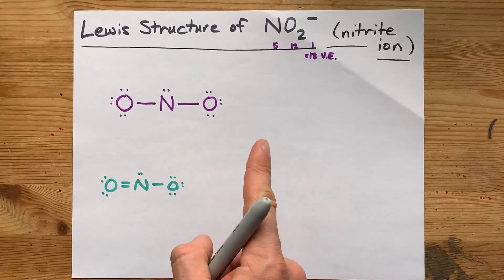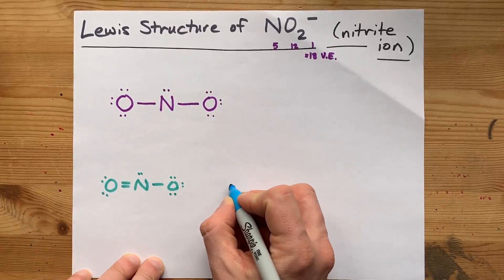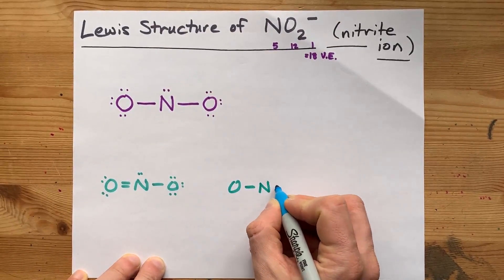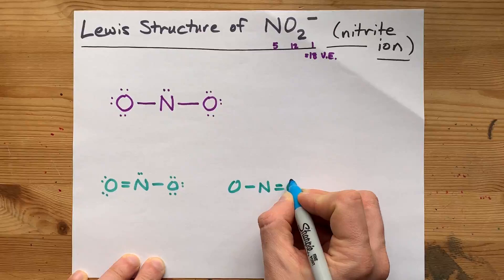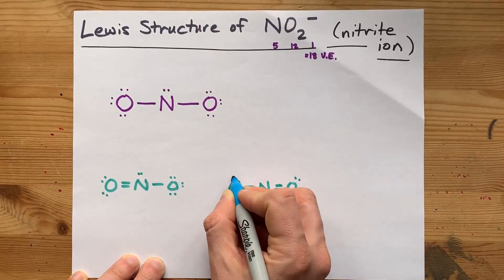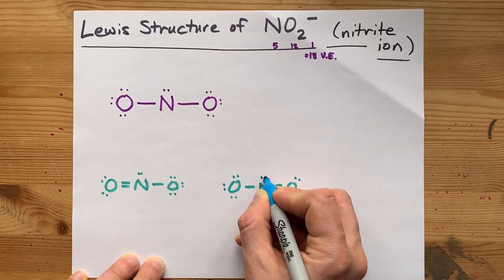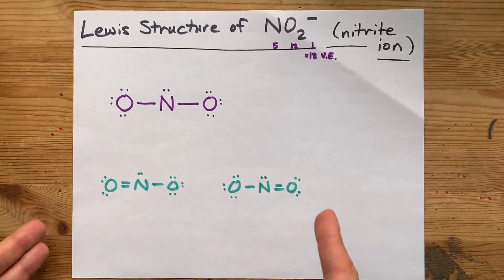But it's not the only valid Lewis structure. I could have just as easily made the double bond between the other oxygen. There we go. Two valid Lewis structures.